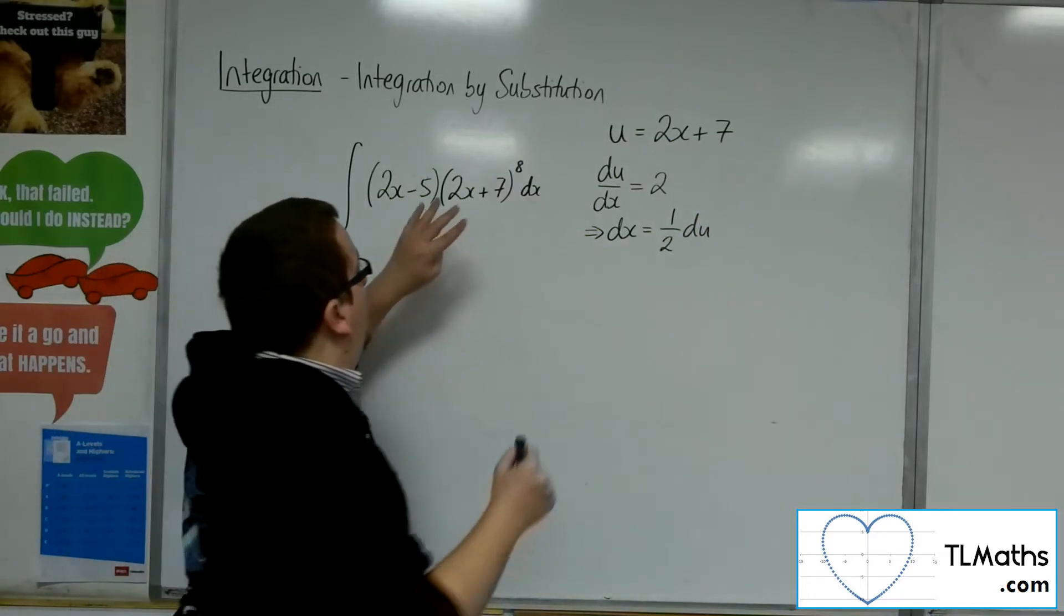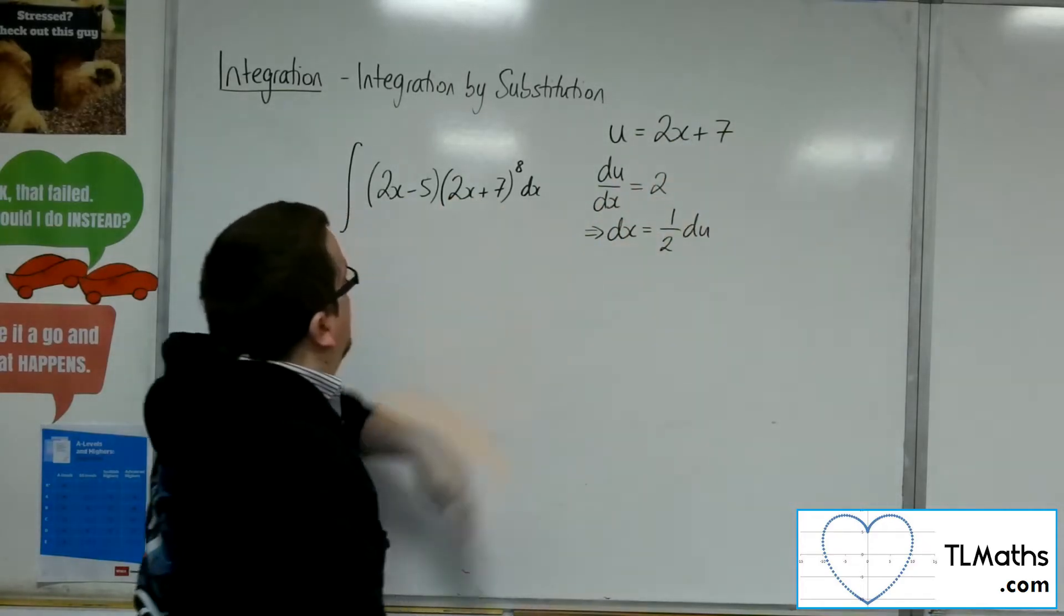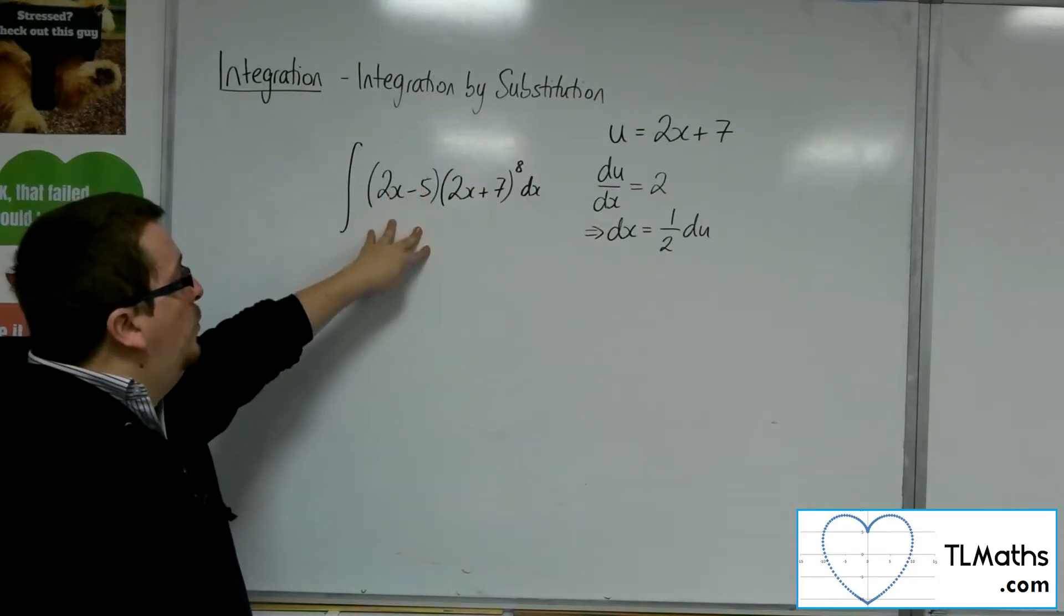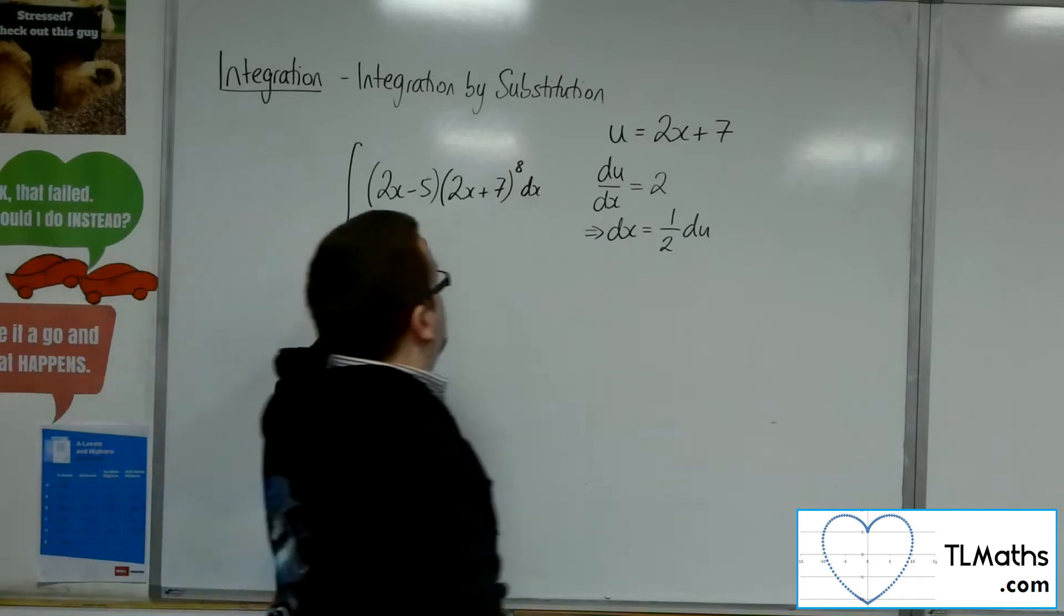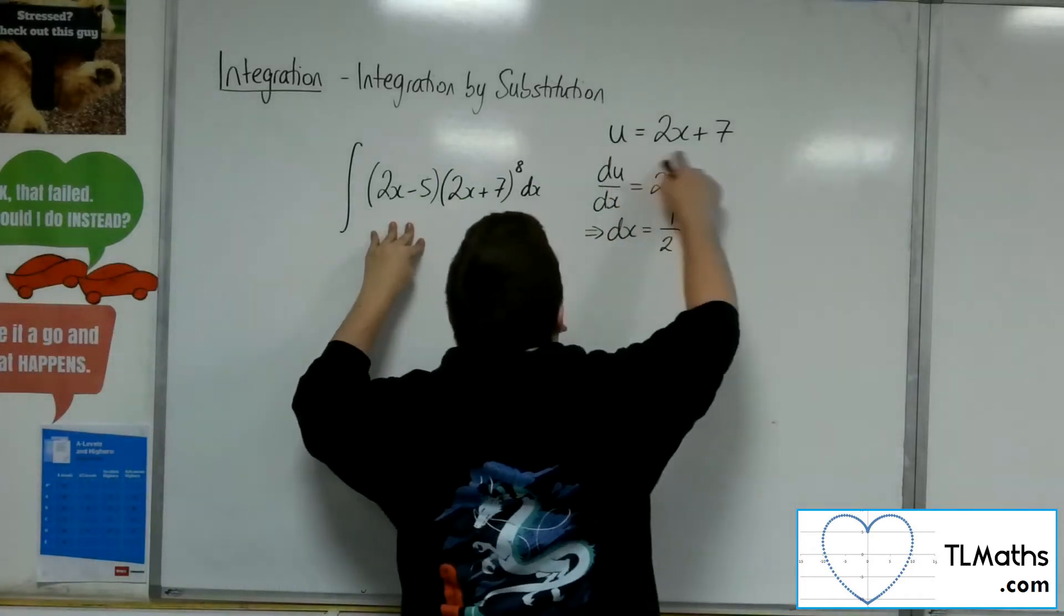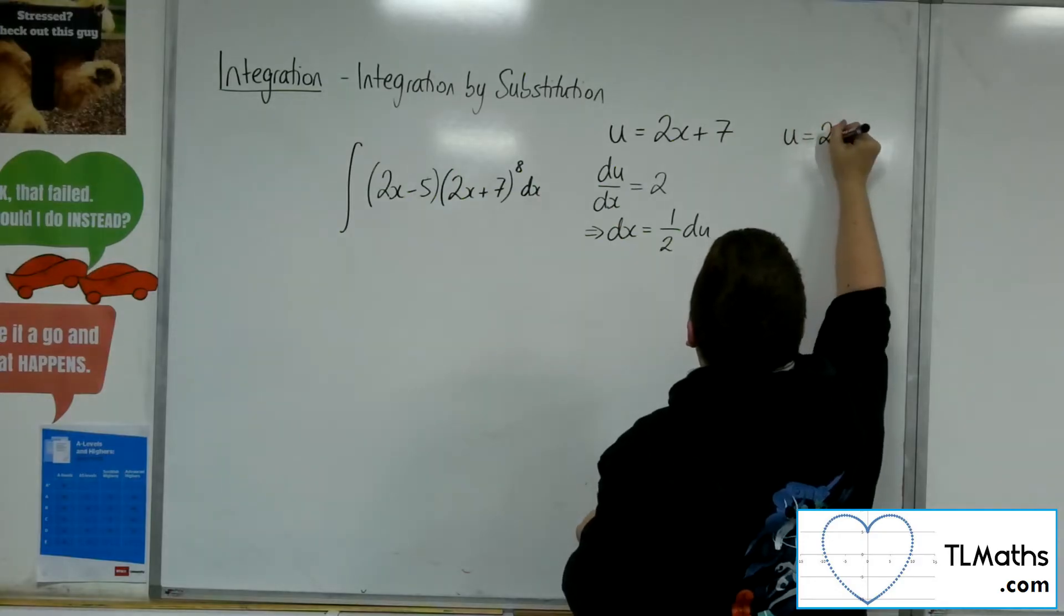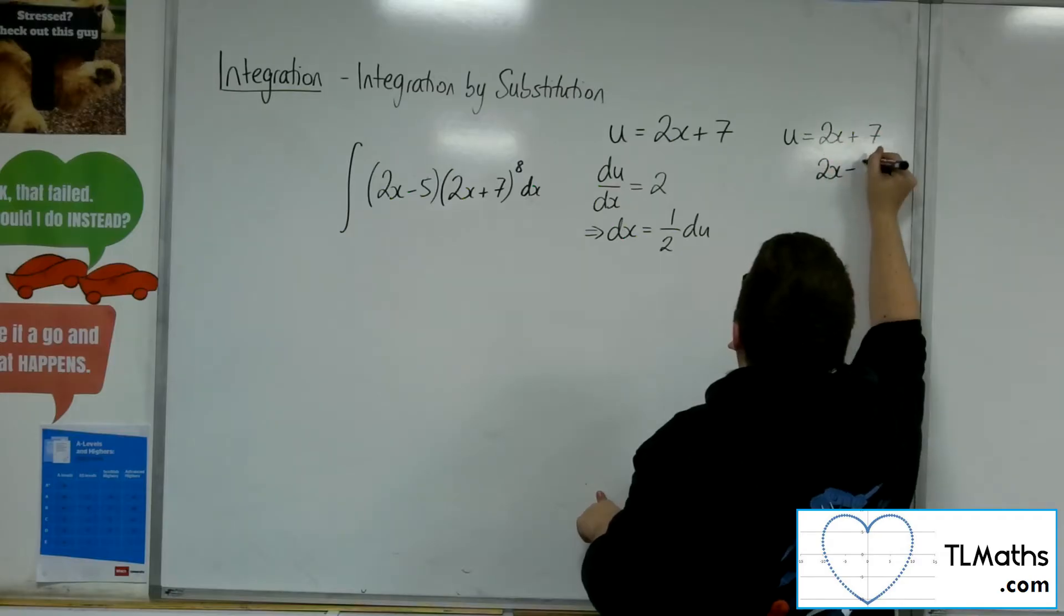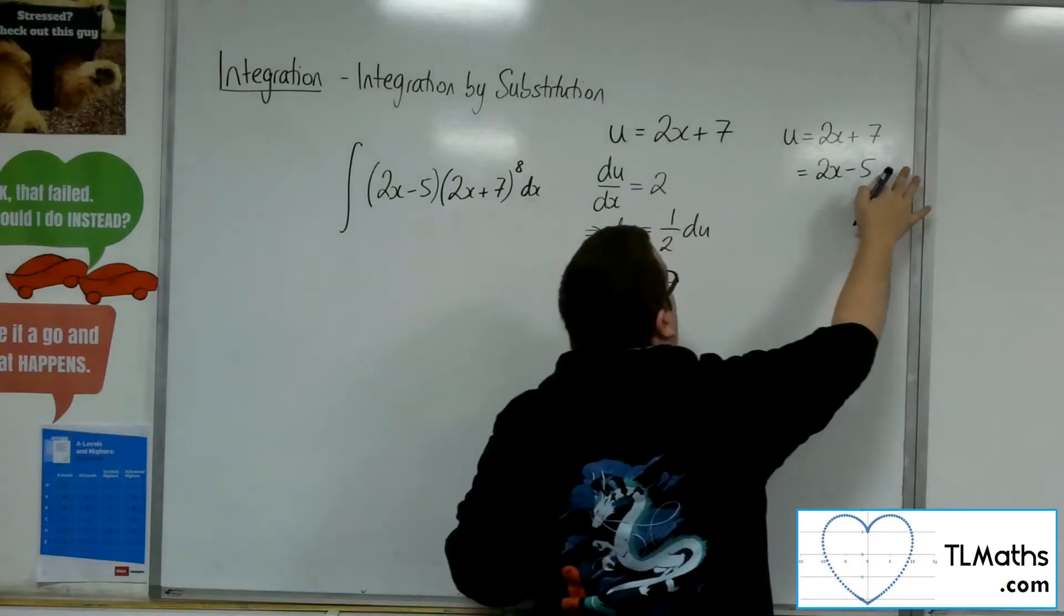Now I have a replacement for the 2x plus 7 and for the dx, but I don't have a replacement for the 2x minus 5, and what I have currently will not cancel it out. So if u equals 2x plus 7, and I want 2x minus 5, how do I get from 7 down to minus 5?